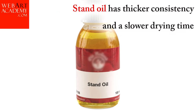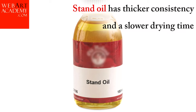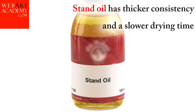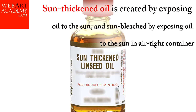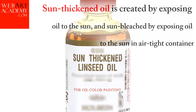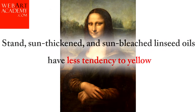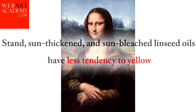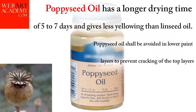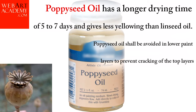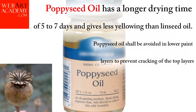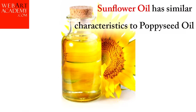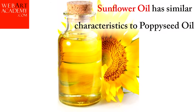Refined linseed oil has a drying time from 3 to 5 days. Stand oil has thicker consistency and a slower drying time; it is a good glazing medium when mixed with turpentine. Sun-thickened oil is created by exposing oil to the sun, and sun-bleached by exposing oil to the sun in an airtight container. Stand, sun-thickened, and sun-bleached linseed oils have less tendency to yellow. Poppy seed oil has a longer drying time of 5 to 7 days and gives less yellowing than linseed oil. Poppy seed oil shall be avoided in lower paint layers to prevent cracking of the top layers. Sunflower oil has similar characteristics to poppy seed oil.